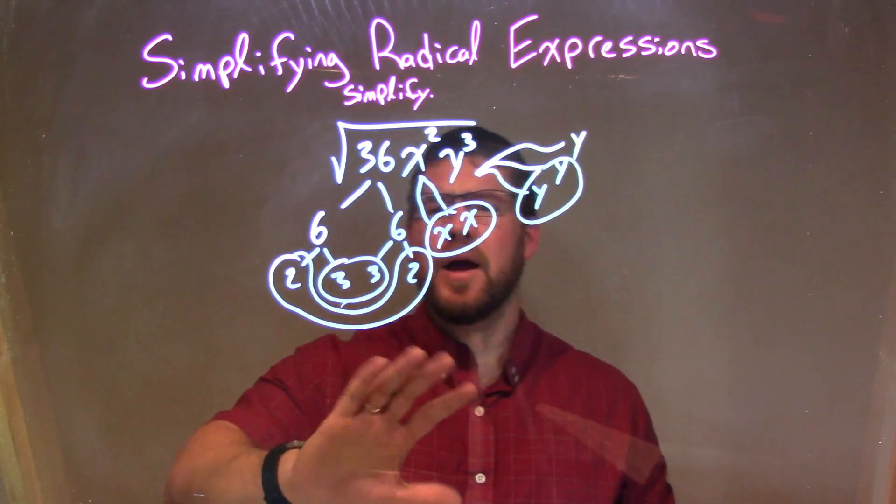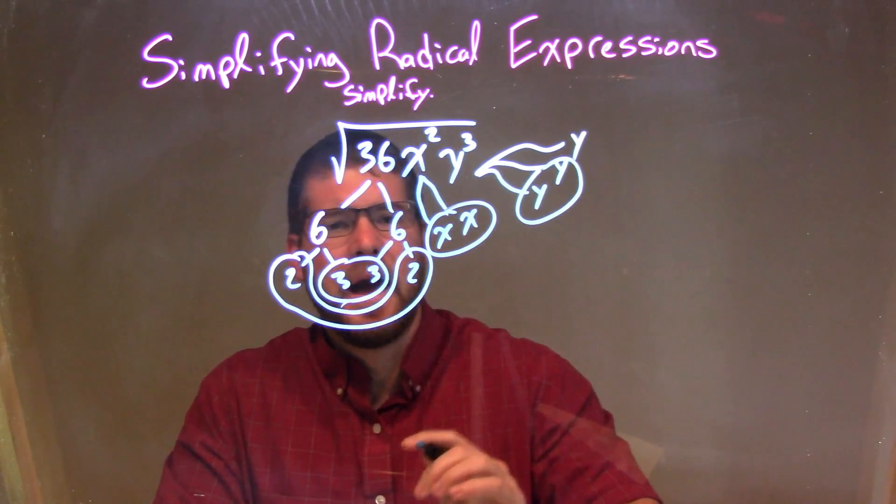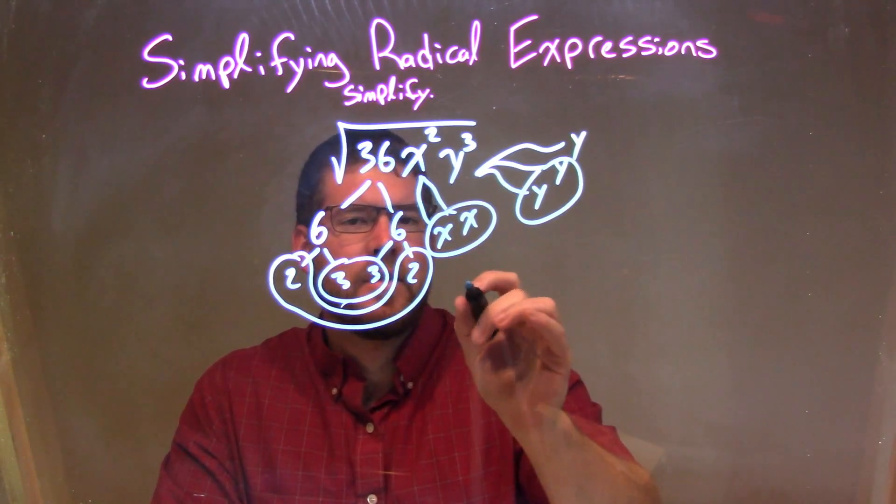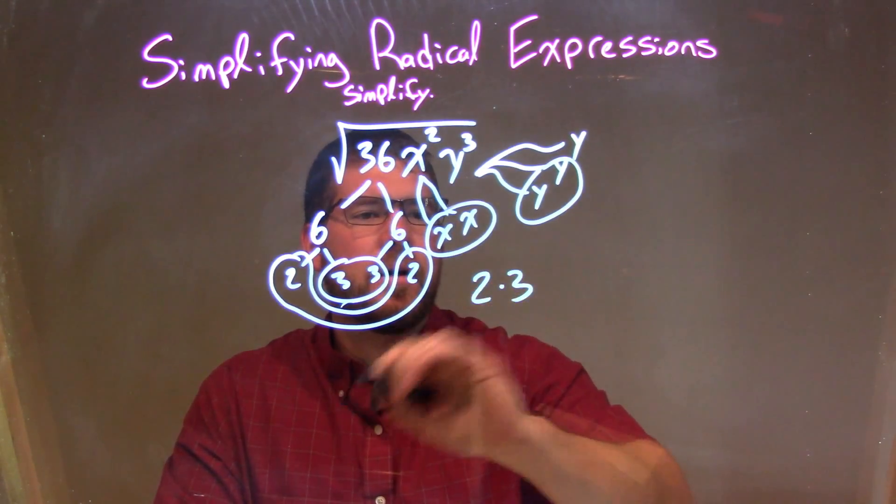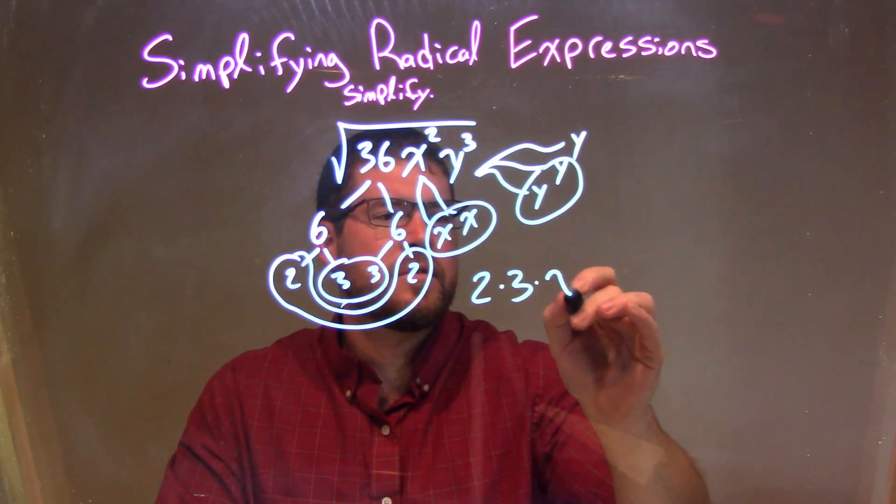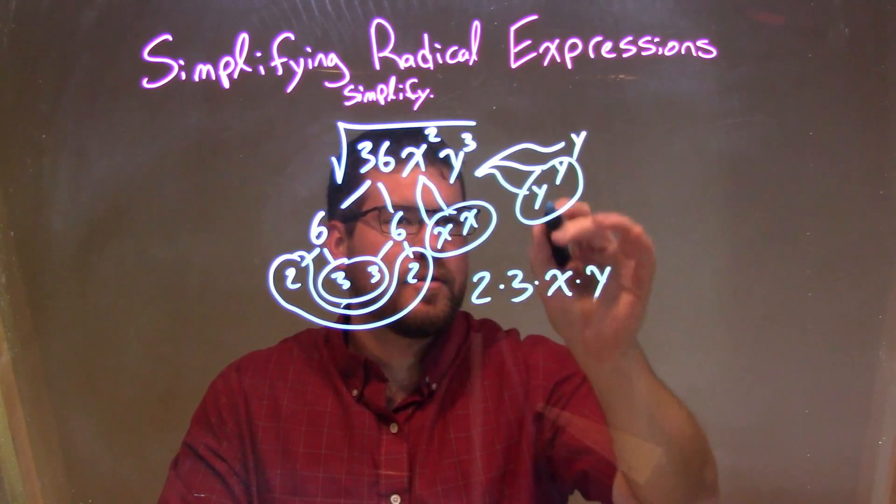So every pair, we're going to put a single number on the outside per pair, outside of the square root. So we have one pair of 2 right there, 2 times one pair of 3s right there, times one pair of xs, times one pair of ys right there.